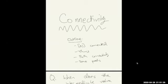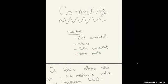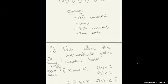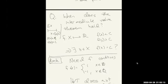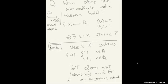Today's lecture is on connectivity. We introduced the idea and motivated the definition on Monday. Today I want to finish by proving that the interval [0,1] is connected, state some theorems, talk about path connectivity, and do some proofs related to that which show generally what proofs involving connectivity look like.